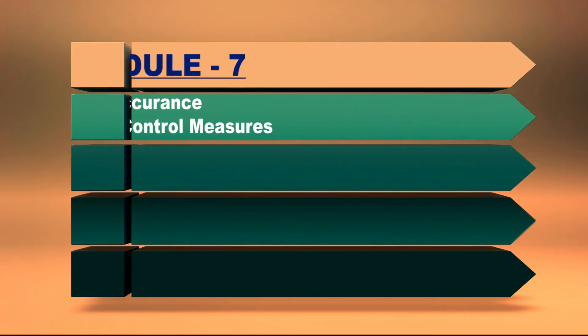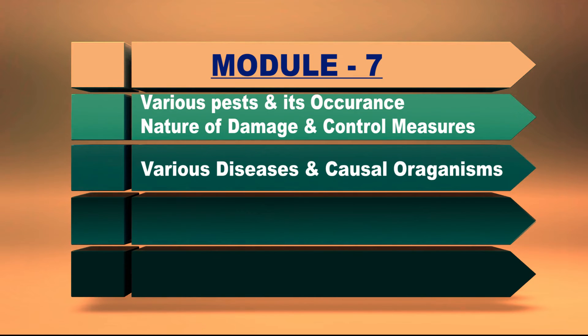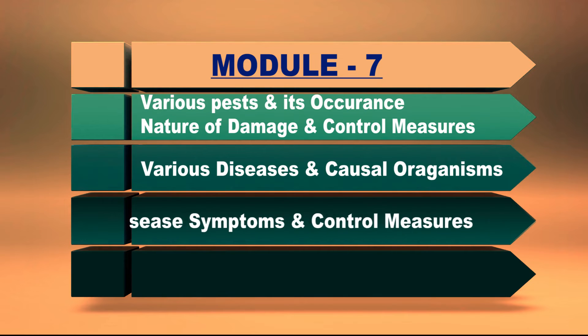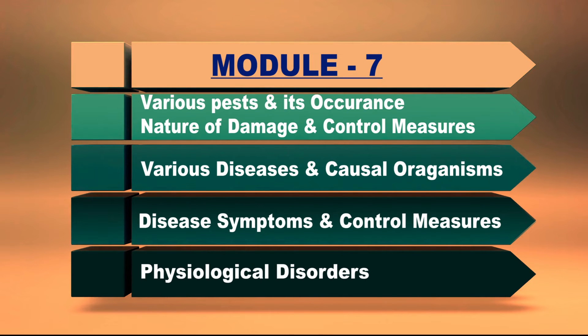The seventh module will discuss detailed information about the occurrence of major pests, their nature of damage, and control measures. Various diseases, their causal organisms, symptoms, and control measures, as well as disorders like bronzing, will also be studied in this module.